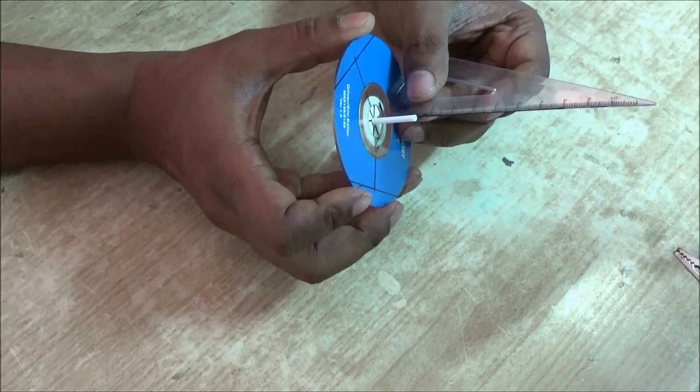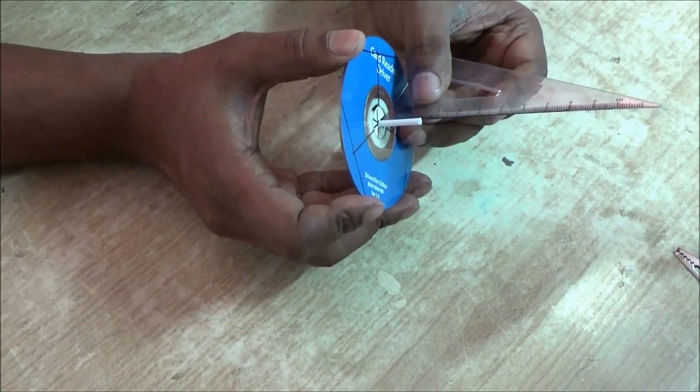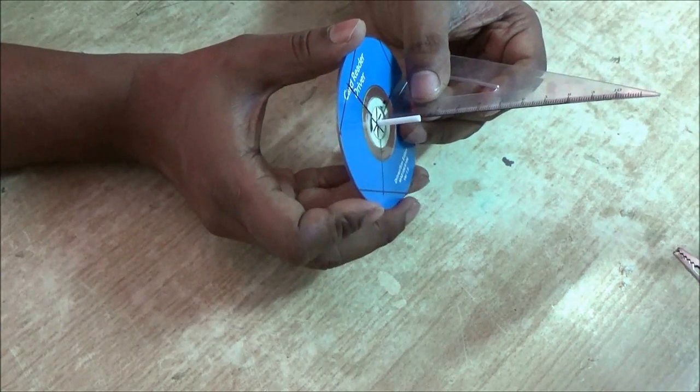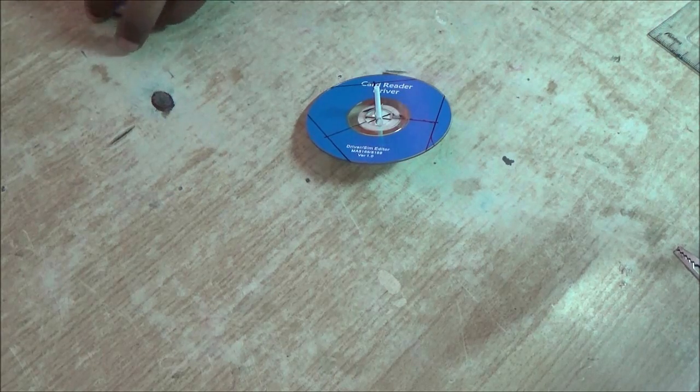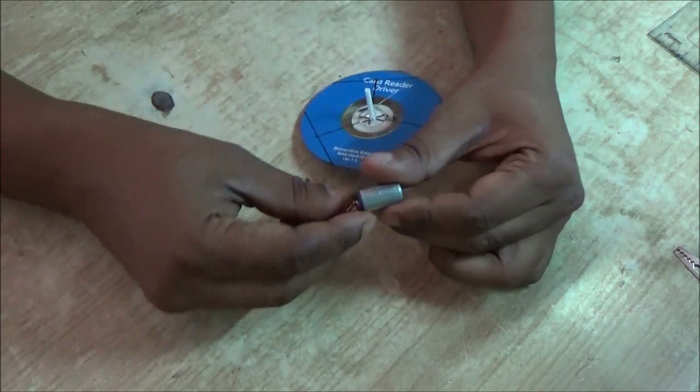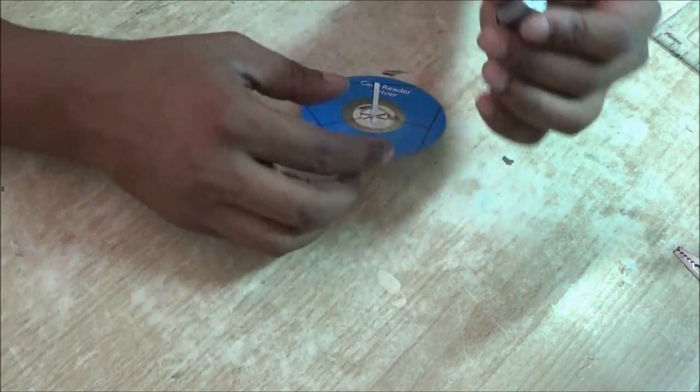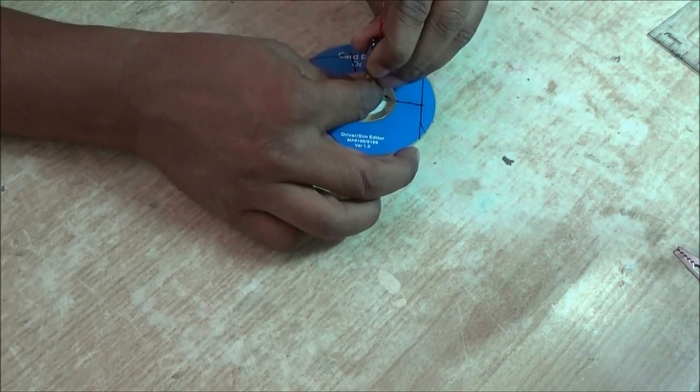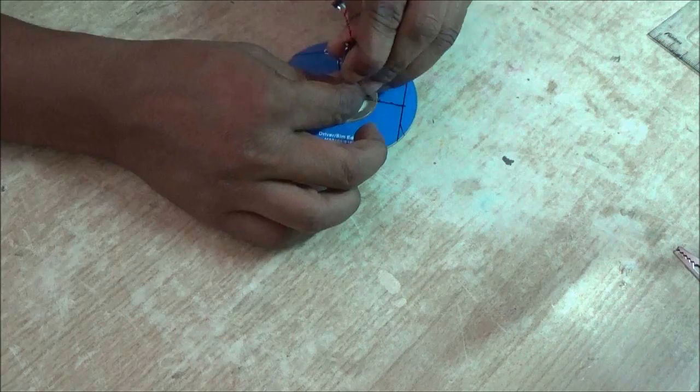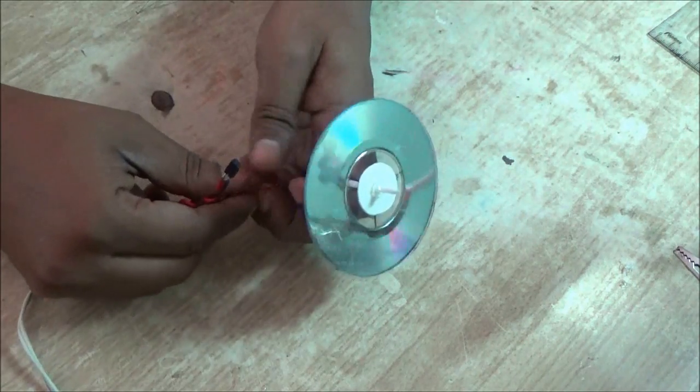You have to connect this small 3-volt DC motor. Push the DC motor shaft into the pipe. Make sure it is tightly fitted. Now power it up. See, the CD is rotating.